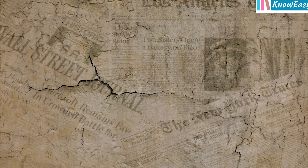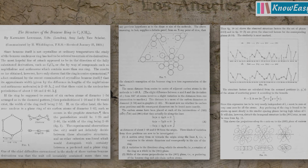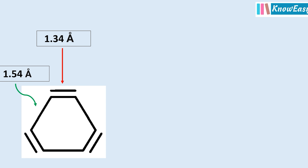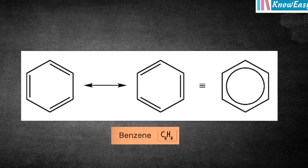Using X-ray diffraction, Kathleen Lonsdale did enormous calculations without modern technology. The carbon-carbon single bond length is 1.54 Å and the carbon-carbon double bond length is 1.34 Å. But the bond length in benzene is 1.39 Å — meaning benzene's bonds are neither purely single bond nor purely double bond. They have a partial double bond character. The 3 pi bonds, i.e., 6 pi electrons, are continuously moving inside the ring. The third resonance structure is the most correct structure of benzene, represented as a flat ring with a circle inside.